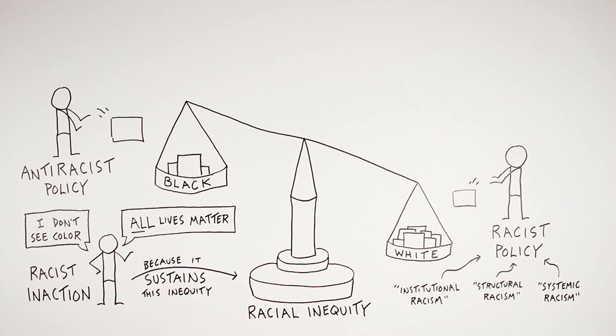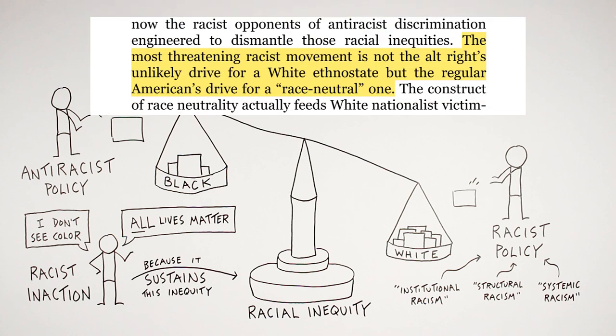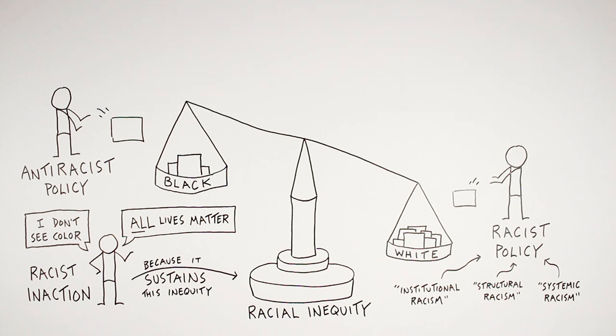This is where a helpful line is drawn: there is no such thing as race-neutral or non-racist. There are only racist actions and anti-racist actions — there's no middle ground. And hitting home that point, Kendi says: 'The most threatening racist movement is not the alt-right's unlikely drive for a white ethno-state, but the regular American's drive for a race-neutral one.'